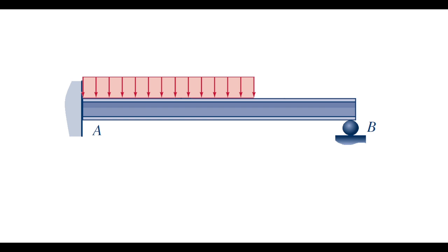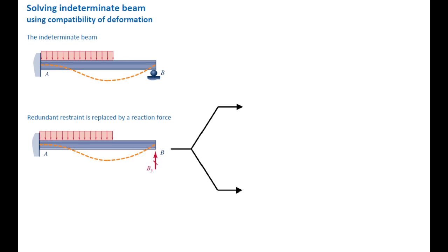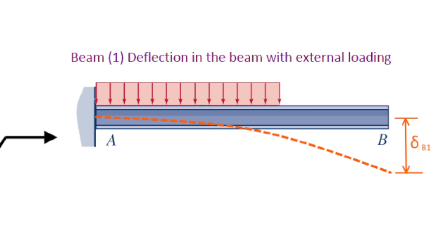Let me consider this problem and how I can solve it. Similar to the concept we just reviewed, we need to release the redundant reaction and replace it with a force — in this case, the reaction force at B in the y-direction. Then I will split this structure into two parts and determine deformations at the point where I released my structure. The first part is a cantilever beam subjected to the original load, and I need to determine the deformation at the very right end — I will call that delta 1.